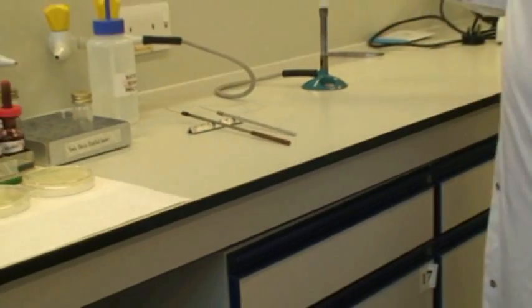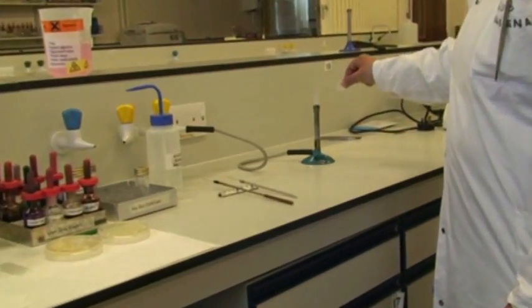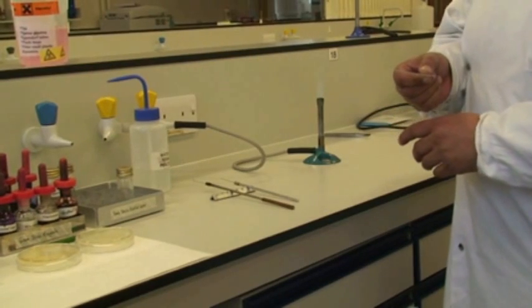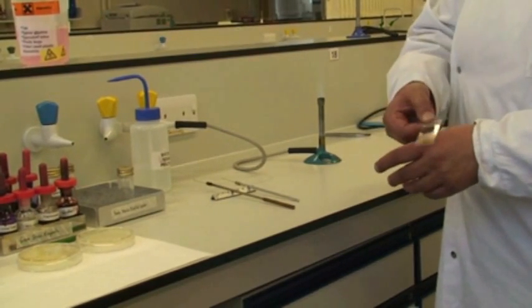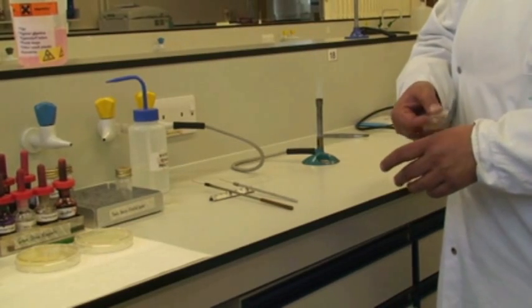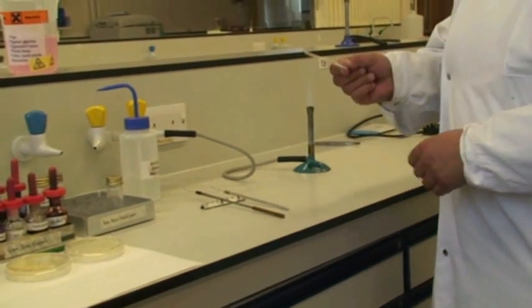What you need to do then is heat fix it, and you can do this by passing it through the Bunsen flame, the hottest part, for about two to three seconds, and then touching the back of your hand. And if it's a little bit too hot, it's been heat fixed.